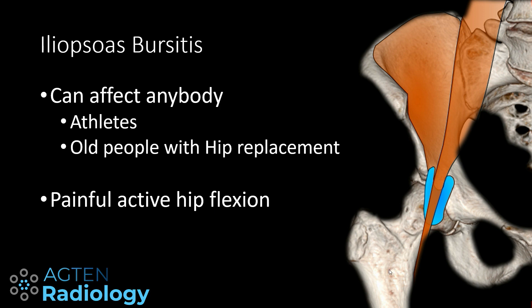Iliopsoas bursitis can affect anybody — young athletes, sports people, and older patients after hip replacement. They can all develop an irritation, tendinopathy, or iliopsoas bursitis. The typical clinical symptoms are pain during active flexion of the hip — for example, when walking up stairs, getting out of a car seat, or standing up from bed. Lifting the leg can be painful, which is quite a distinct symptom.